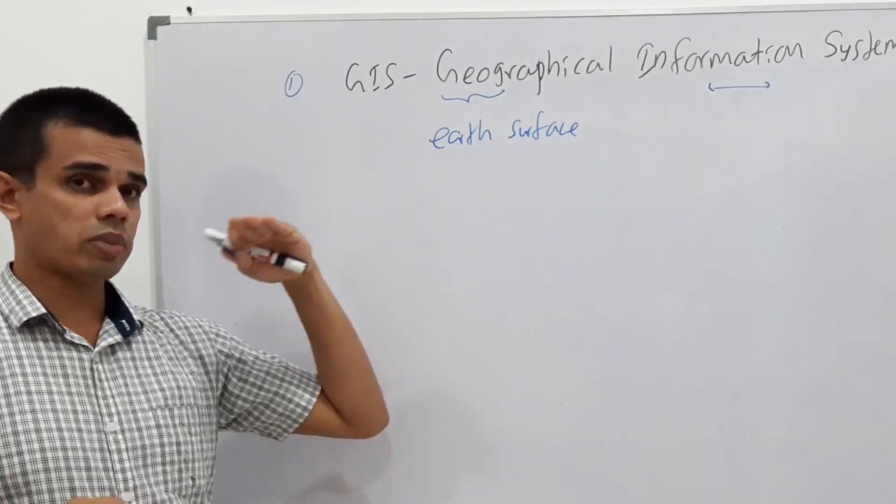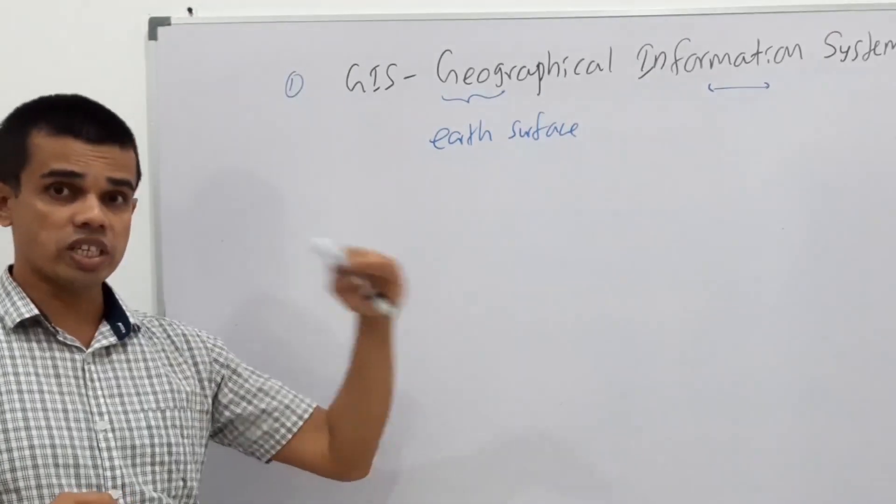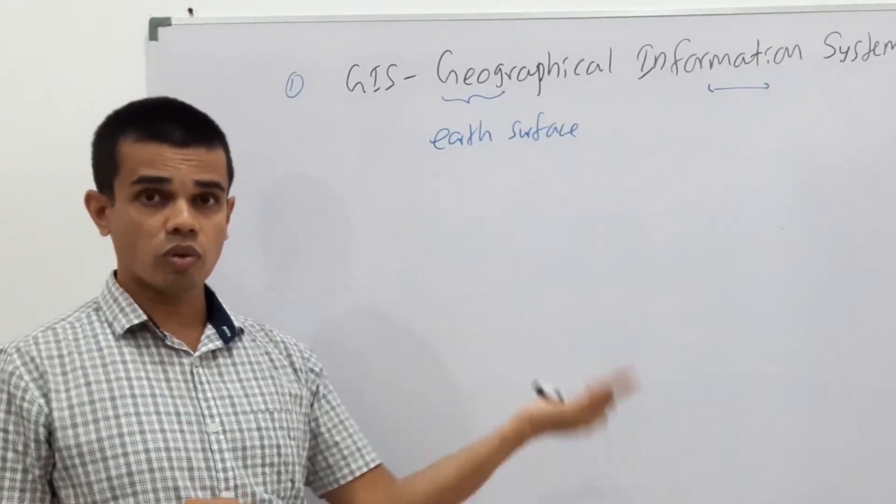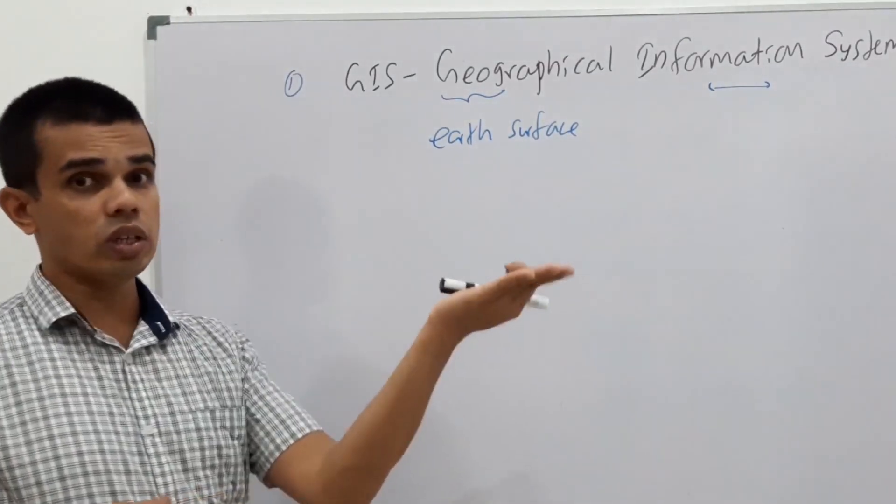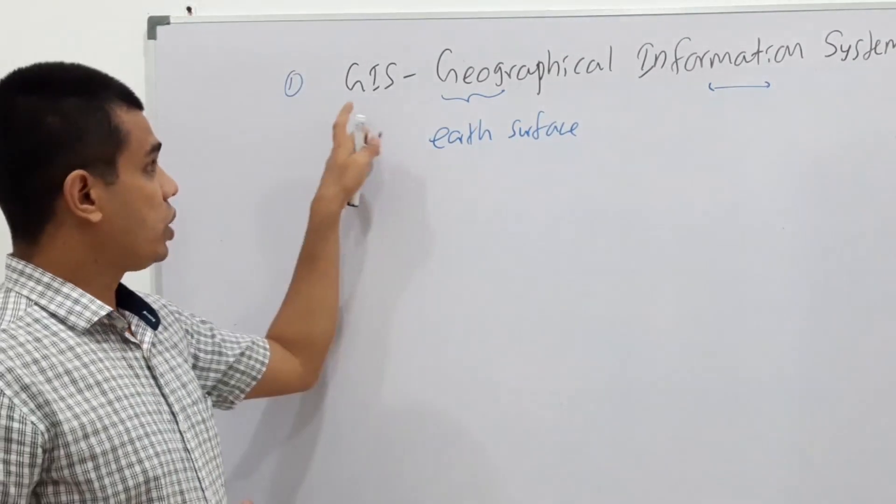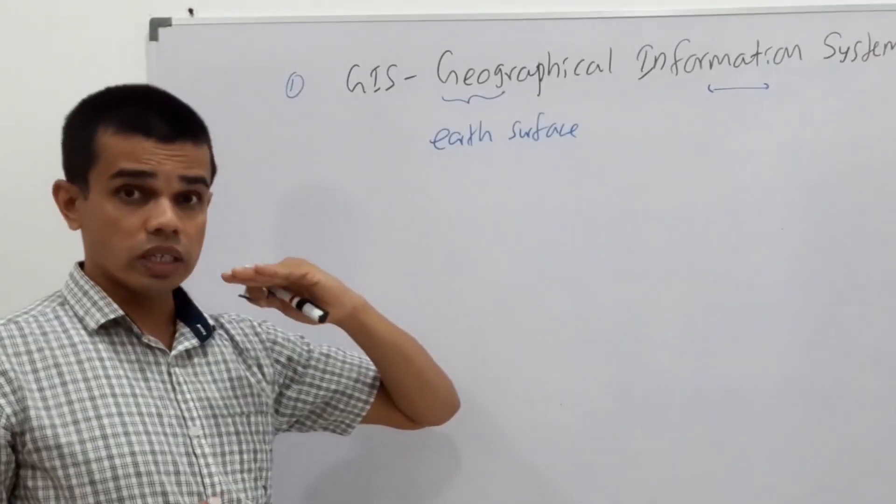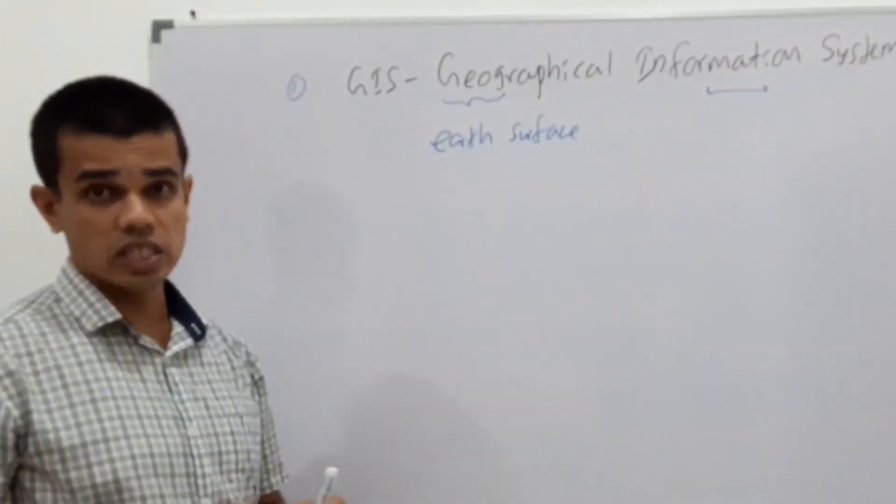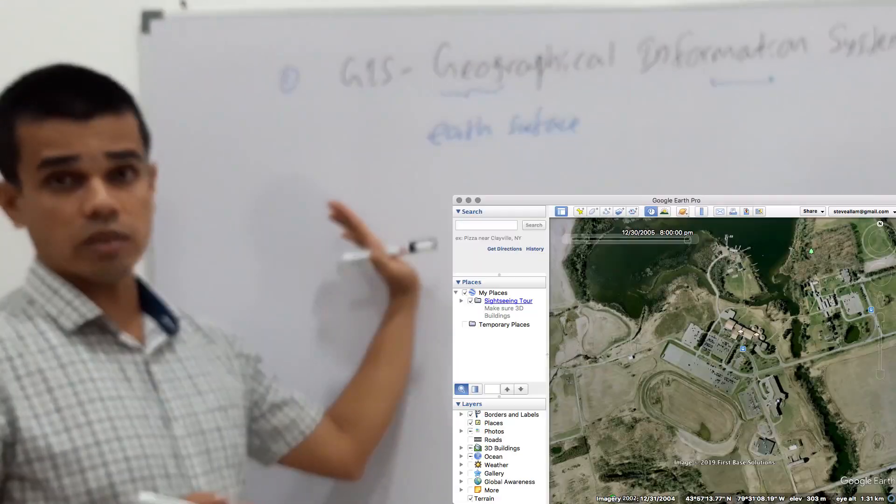On the earth surface we have trees, we have rivers, we have roads, we have buildings. They are built into the surface of the earth. If there's a system where they give you information related to the earth surface, let's call it as GIS in our ICT syllabus.